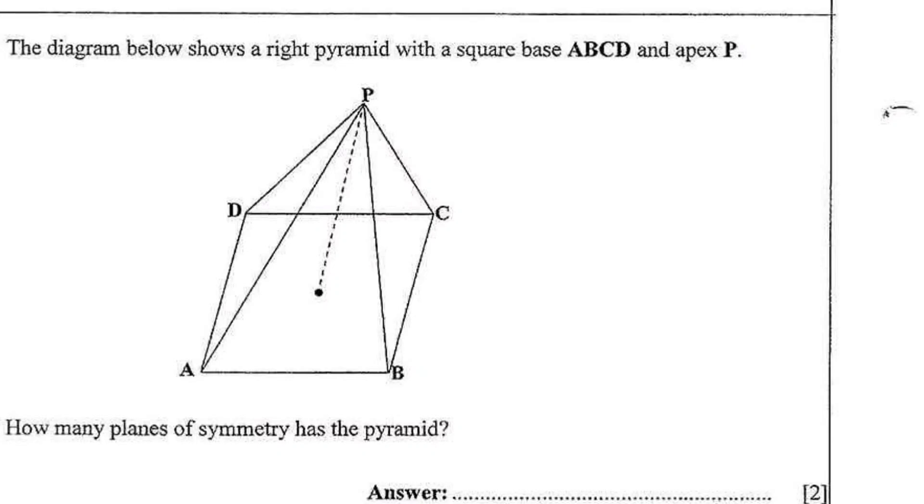So this question is very simple and yet very important. The diagram below shows a right pyramid with a square base ABCD and the apex P. It's a square pyramid, you should know that.